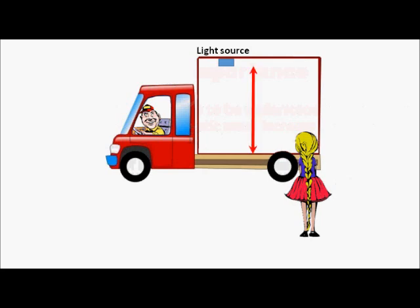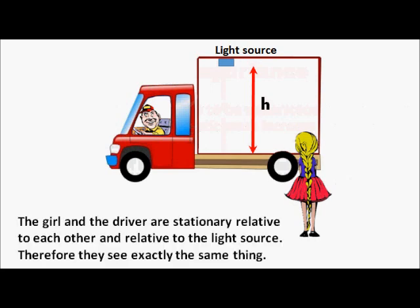There is a light source at the roof of the compartment. The distance from the light source to the floor of the compartment will be known as H. A light pulse emanates from the light source and strikes the floor of the compartment. Since the girl and the driver are stationary relative to each other and stationary relative to that light source, any measurements or observations they make are expected to concur.